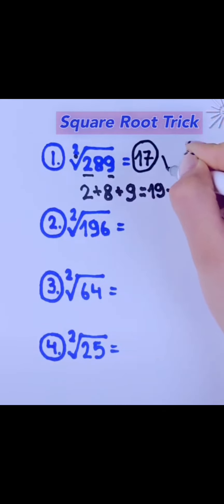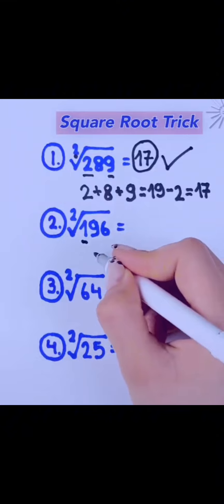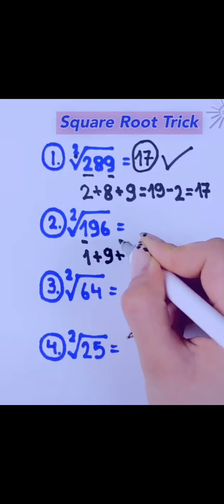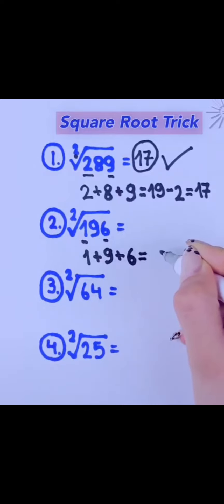That was really easy, wasn't it? Next, let's look at another set of numbers. Add 1, 9, and 6, which equals 16. Subtract 2 again, and you get 14.